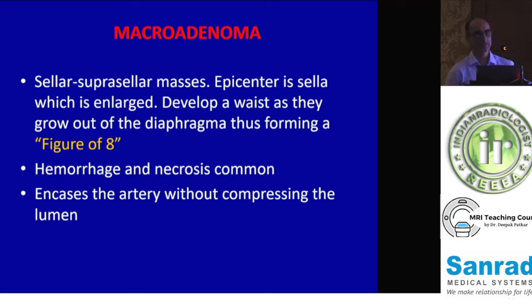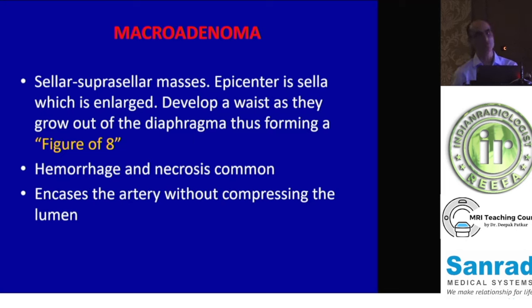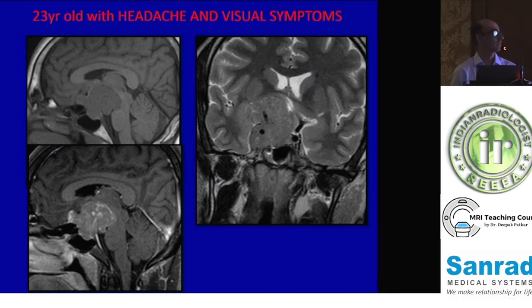Moving on to macroadenomas — these are larger tumors whose epicenter is in the sella, which is generally enlarged. They grow out of the diaphragma producing a figure-of-8 appearance. Hemorrhage and necrosis are very common features of this adenoma, although it is a benign tumor. It is a soft tumor, so even if it encases the ICA, you will very seldom see actual luminal narrowing or obliteration of the ICA lumen. This is a classical macroadenoma — a large tumor with sellar, suprasellar, and right parasellar components involving the right cavernous sinus, encasing the right ICA with flow-void well maintained and heterogeneous enhancement on T1 post-contrast.